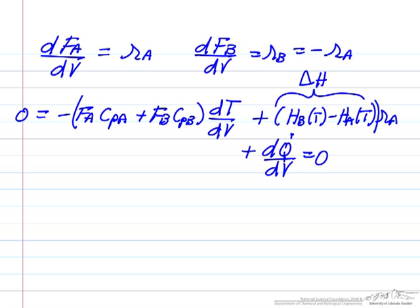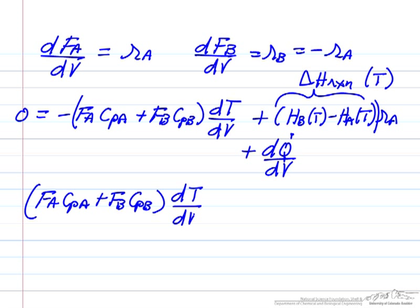So I'll put down the parentheses here. So this term is the heat of reaction, right? Enthalpy of products minus enthalpy of reactants. And it's the heat of reaction evaluated at temperature T, since that's the enthalpy that we're using in the calculation. Okay, so we're almost finished. Let's rearrange and bring some things to the left side of the equation. The flow rate of A, heat capacity of A, plus the flow rate of B, heat capacity of B, times the derivative of the temperature as we move down the reactor, is equal to heat of reaction at temperature T times the rate of reaction, which of course is a function of location in the reactor, plus dQ dot dV.